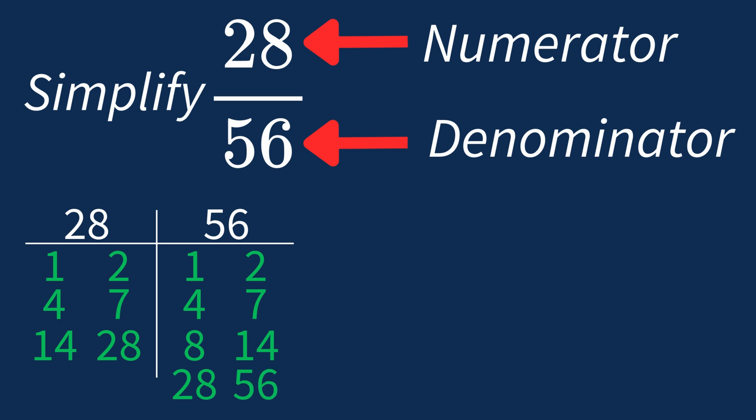So the largest common factor between 28 and 56 is 28. This means we can divide both the numerator and denominator by 28 to simplify the fraction.